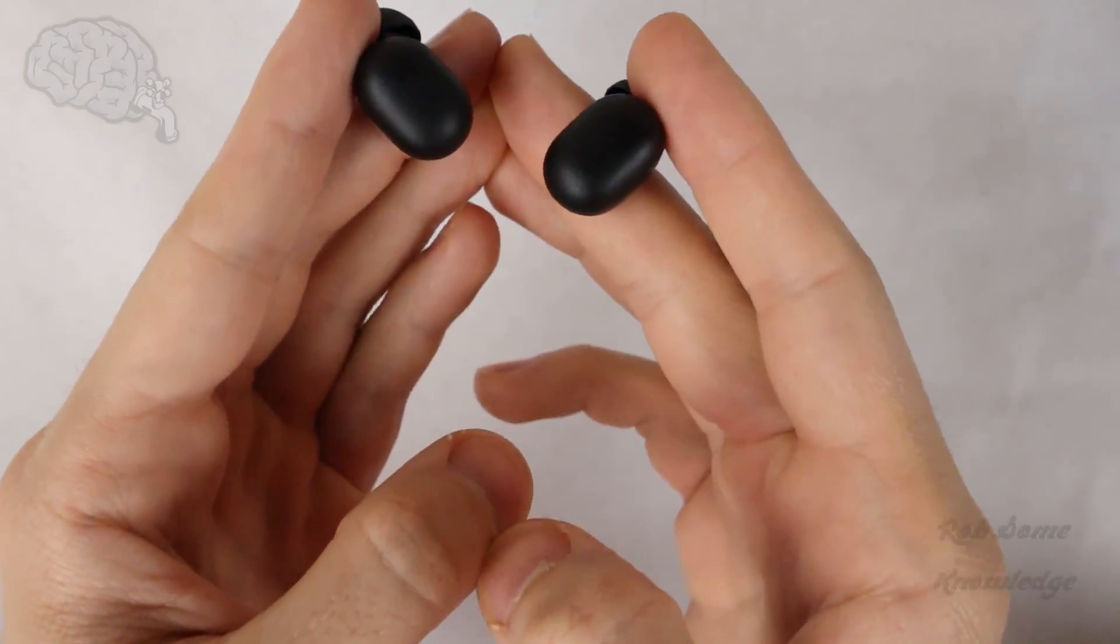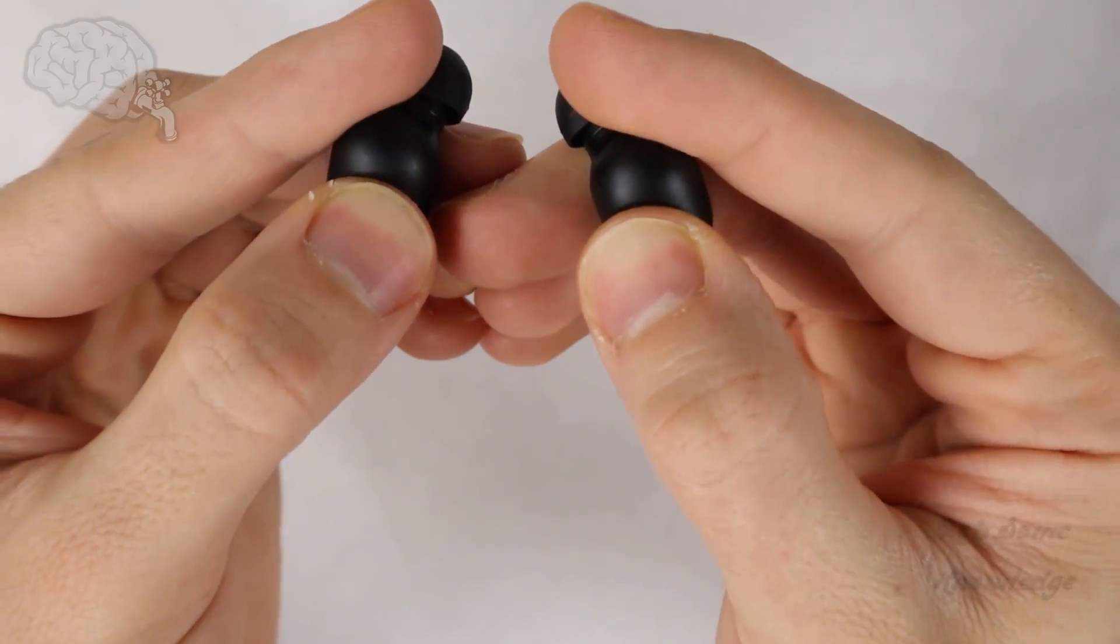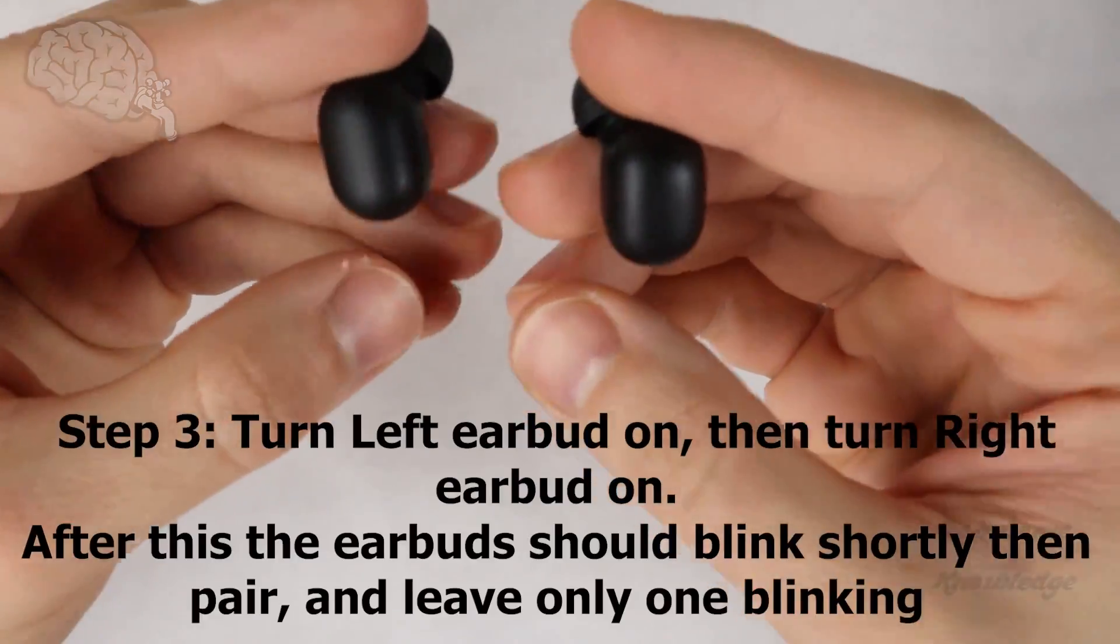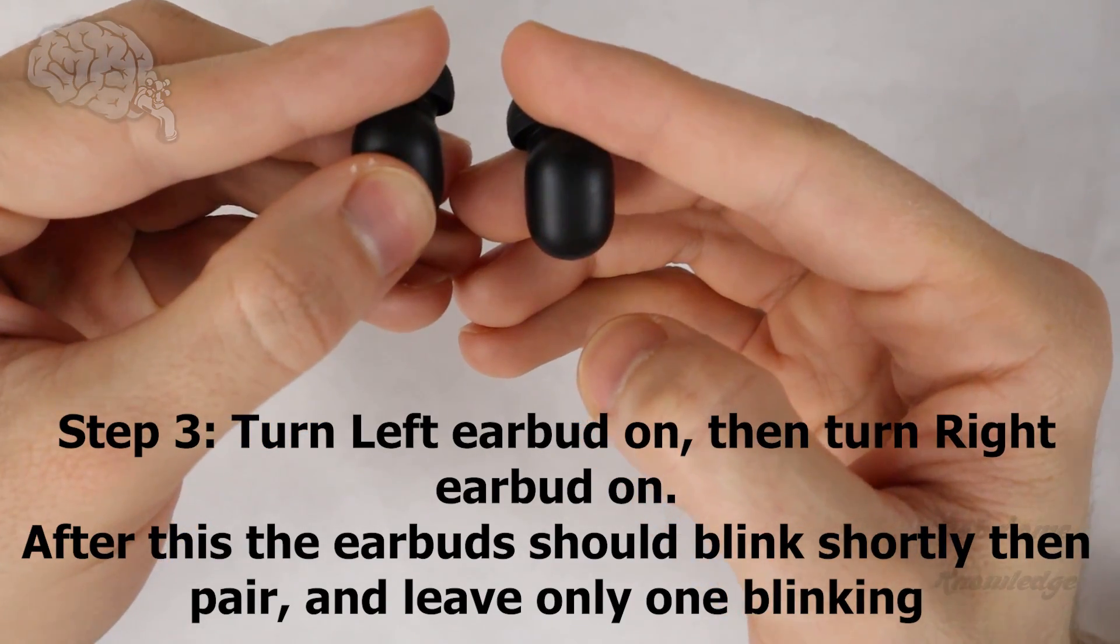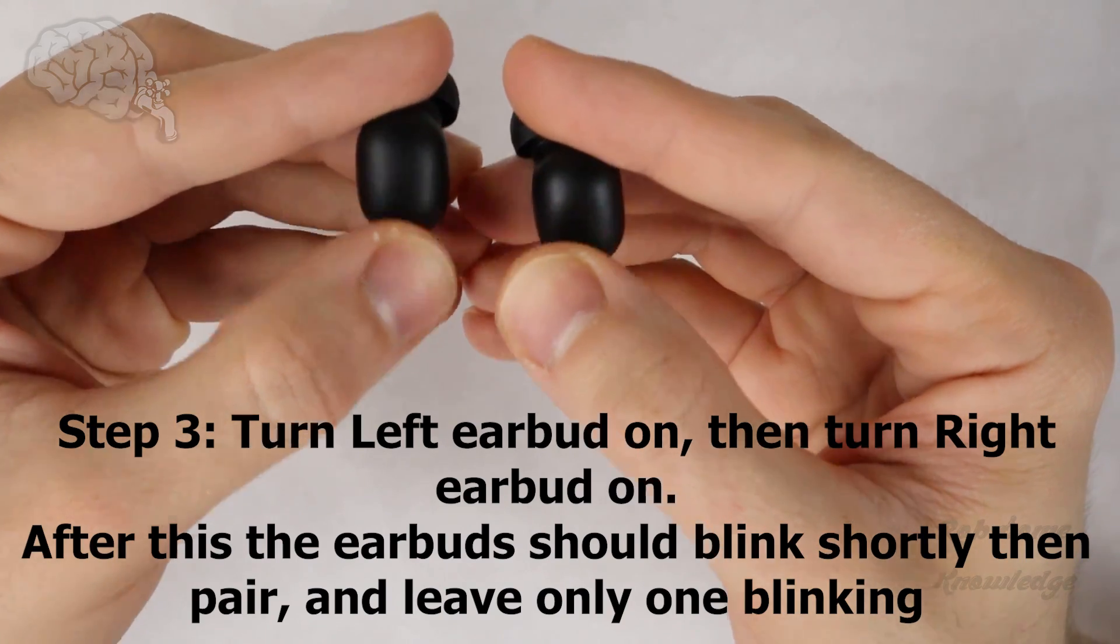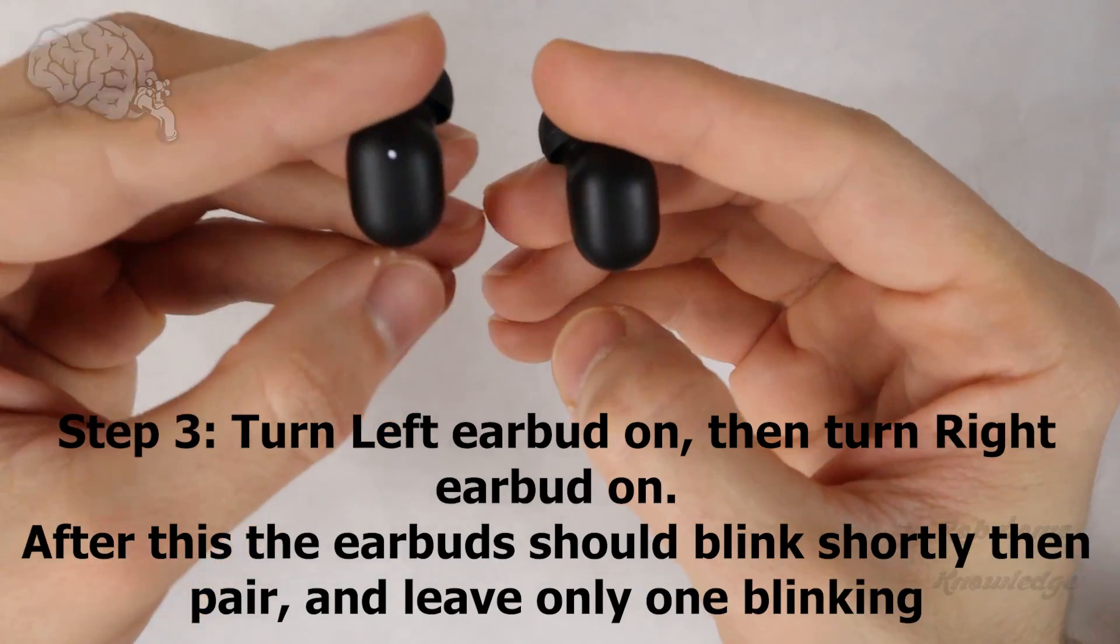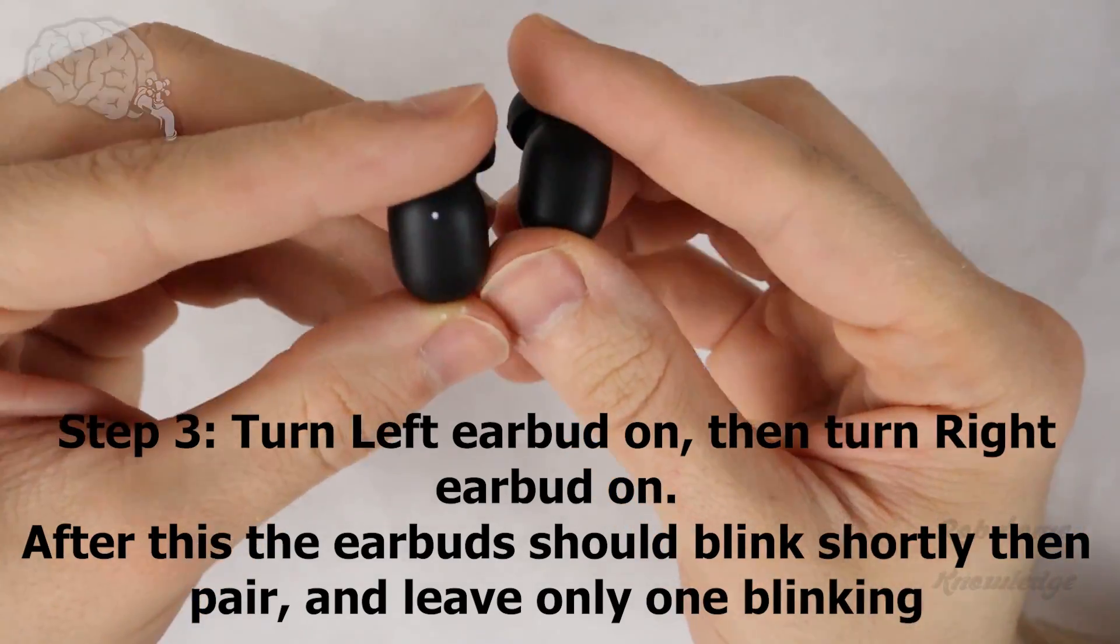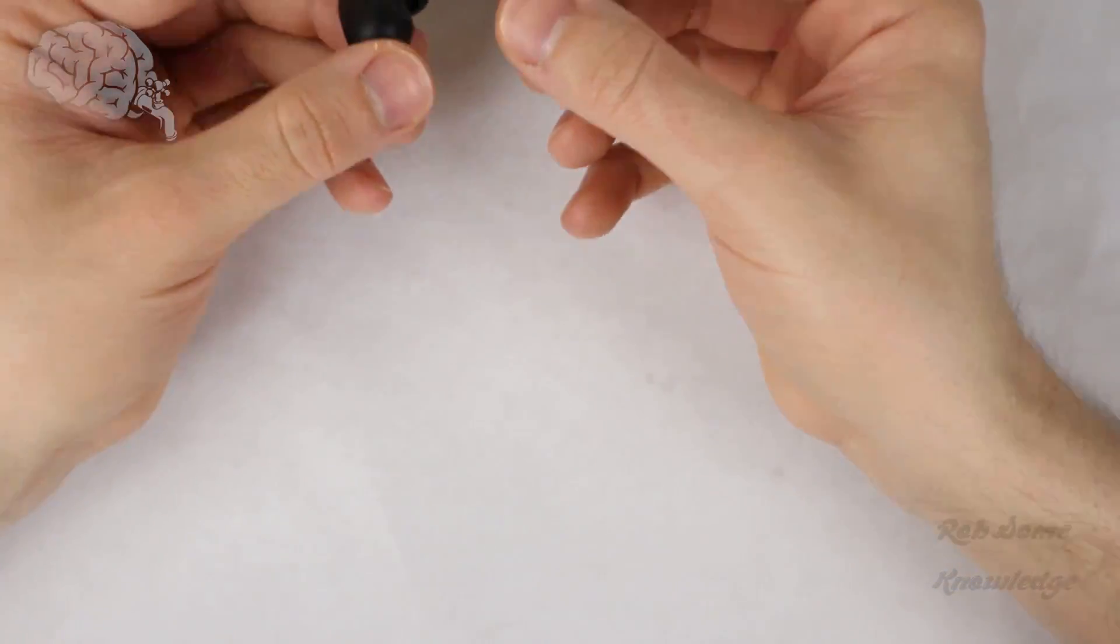At this point, they are now off again, so turn them both manually back on. Turn them on one at a time - the left one first, then the right one. One, two, three... one, two, three. As you can see, now just that one is blinking. Now these are both paired together and ready to pair to your phone or computer as one device.